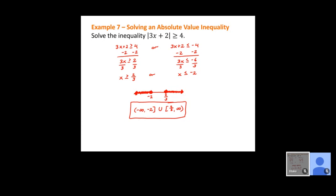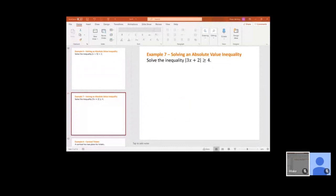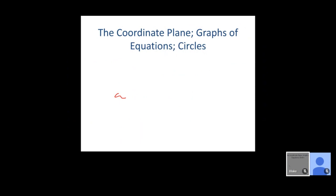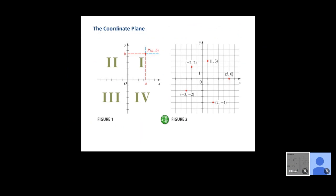That's where we stop in section 1.8. Moving into 1.9, we're looking at the coordinate plane, graphs of equations, and circles — three topics that all go together. We'll start with the coordinate plane and get into graphs of equations and circles towards the end of the section, picking up wherever we leave off on Wednesday.